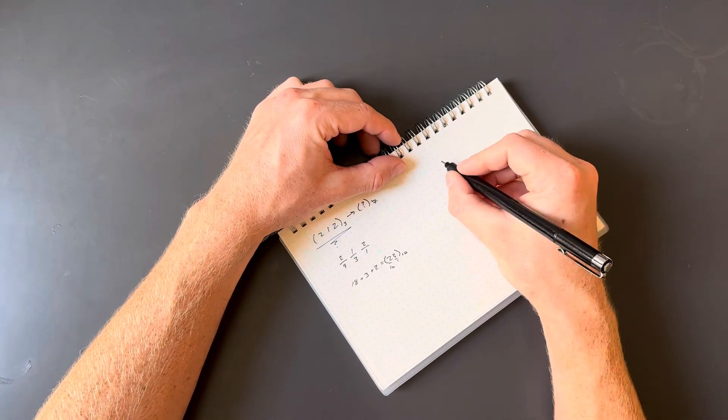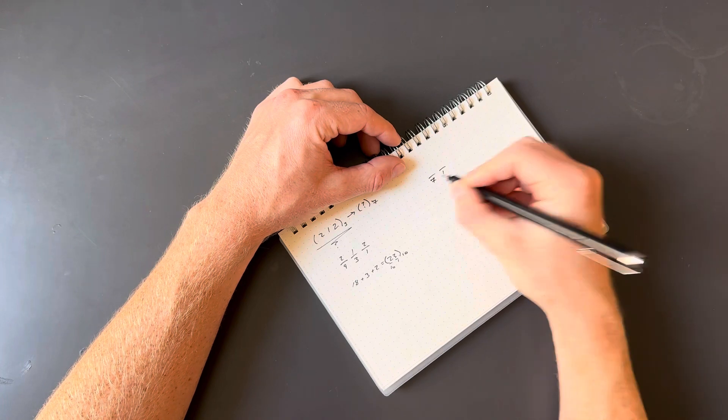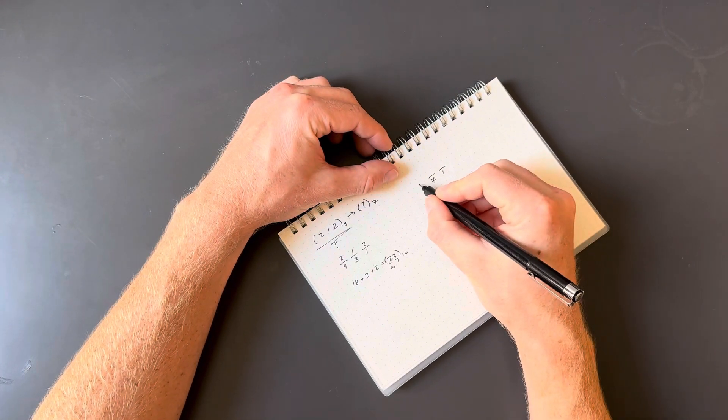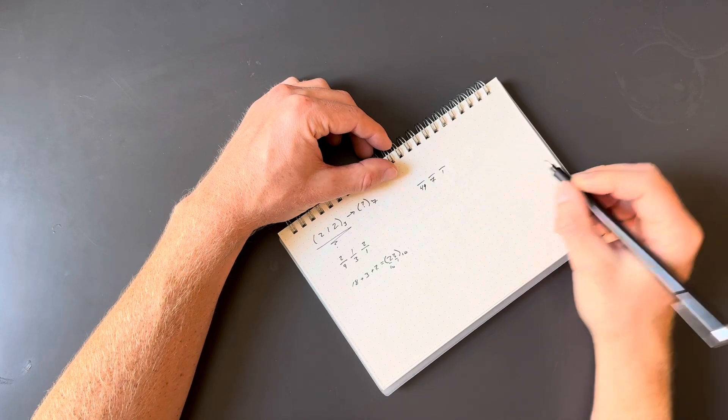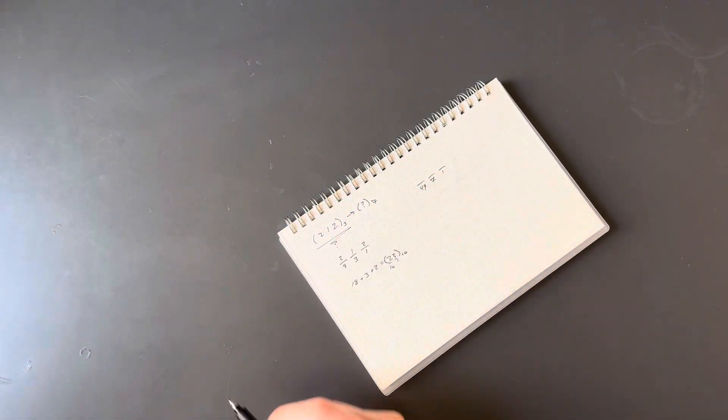So in the base 7 system, we have a ones place, followed by a sevens place, and then after that we would have a 49s place. Because we're just multiplying by 7 since that's our base every time we go up a place.